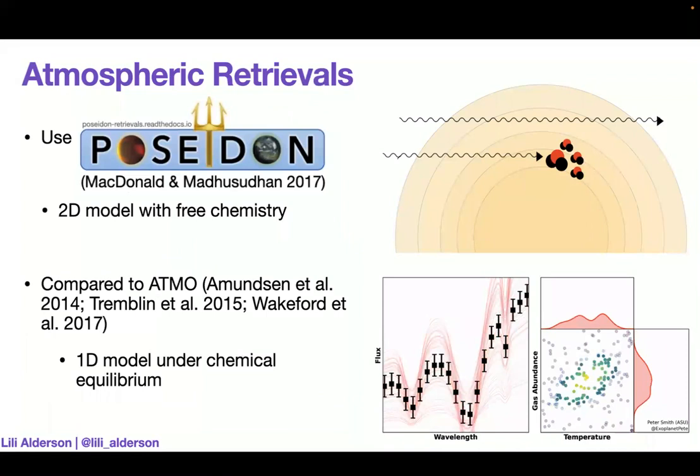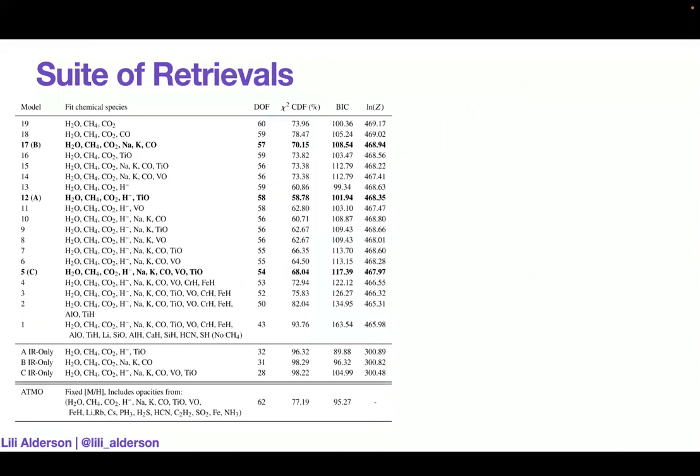Atmospheric retrievals can be very computationally expensive depending on the complexity of the model that you start with. We can either run a free chemistry retrieval in which all of the abundances within the model are free to vary as wildly as they like to. Or we can have an equilibrium chemistry retrieval in which case everything has to follow the chemical equations, the true physics that's happening within the atmosphere, to as much as we know it. We used Poseidon, which is a 2D model with free chemistry developed by Ryan McDonald, who was a postdoc at the University of Michigan. And we compared those results to that of Atmo, which is a 1D model under chemical equilibrium, and those were run by David Singh. In practice for WASP-17, what this looks like was developing this huge suite of retrievals, varying the different molecules we were throwing into the model. Do we need the presence of a cloud deck? Does that improve the state of the model? We found that it did.